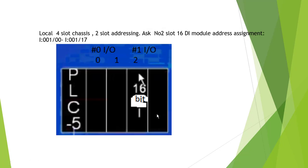For example: local slot chassis, 2-slot addressing. Slot number 2 is a 16-bit digital module. It's a 4-slot chassis: slots 0, 1, 2, 3. With 2-slot addressing starting at 0, 1, 2 — those are 16 bits. So this one, 2-slot addressing: slot 0 and slot 1 is IO group number 0.